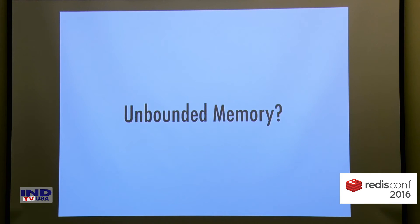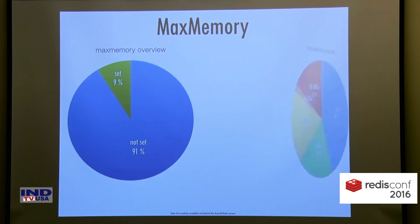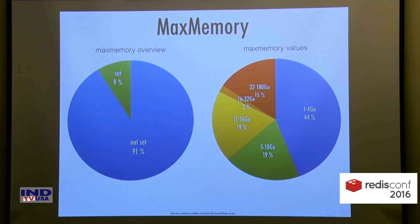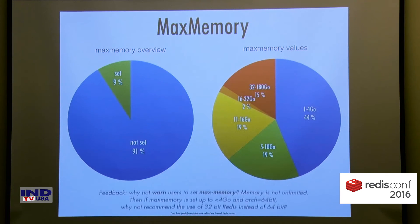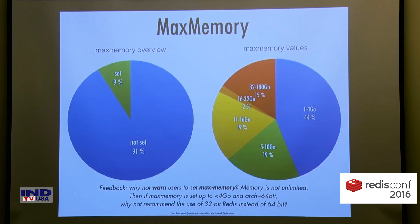Just like disk space, memory is also a finite limited server resource. Looking at our dataset, we found that 91% of Redis servers were not configured using a max memory value. We can stop wondering why Redis does not warn users at startup time when max memory is not set. And if max memory is set for values lower than 4GB with a 64-bit architecture, why not recommend the use of 32-bit Redis instead? It would be a great suggestion for users.